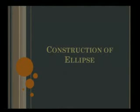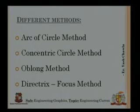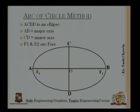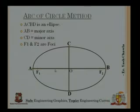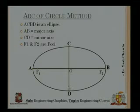For a hyperbola, eccentricity is always greater than 1. Now let's discuss the construction of an ellipse. There are four methods: arc of circle method, concentric circle method, oblong method, and directrix focus method. We'll discuss all four today step by step. Before starting, let's understand the key features of an ellipse: major axis AB, minor axis CD, and center O.